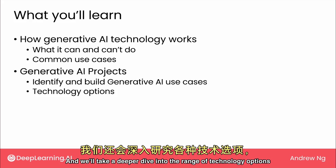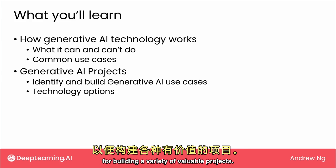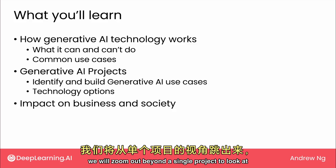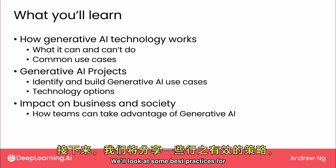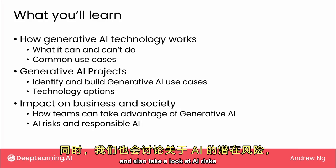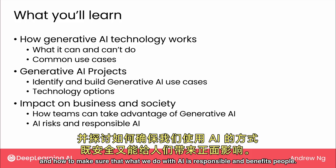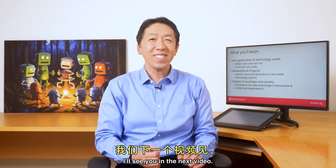We'll take a deeper dive into the range of technology options for building a variety of valuable projects. In the final week, we will zoom out beyond a single project to look at how Generative AI will impact businesses, as well as society at large. We'll look at best practices for how teams or a company can take advantage of Generative AI, and also take a look at AI risks and how to make sure that what we do with AI is responsible and benefits people. I'm excited to dive into this material with you. Let's go on to the next video, where we'll go through a non-technical description of how Generative AI technology actually works. I'll see you in the next video.